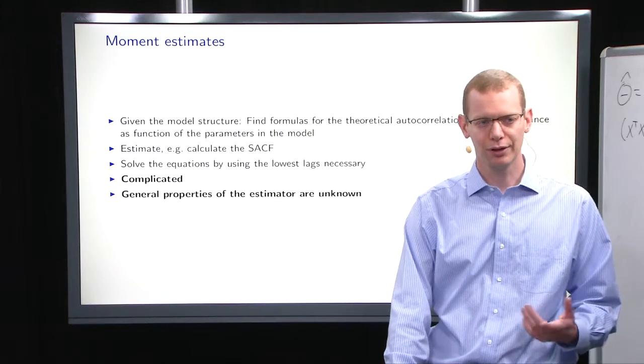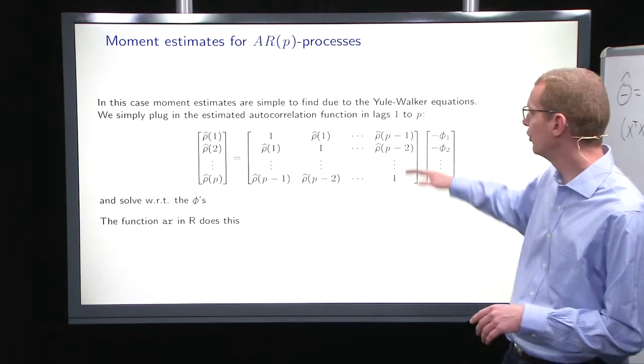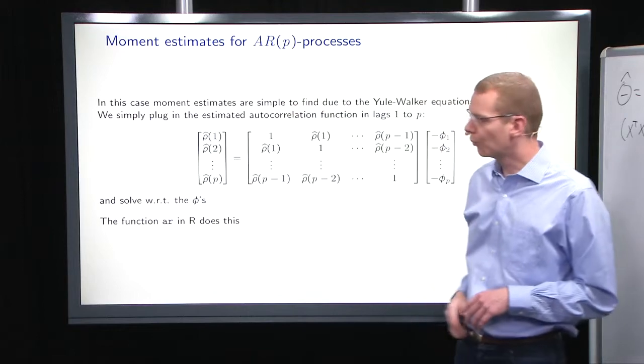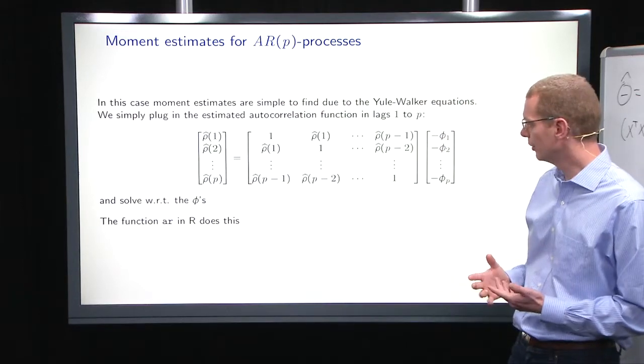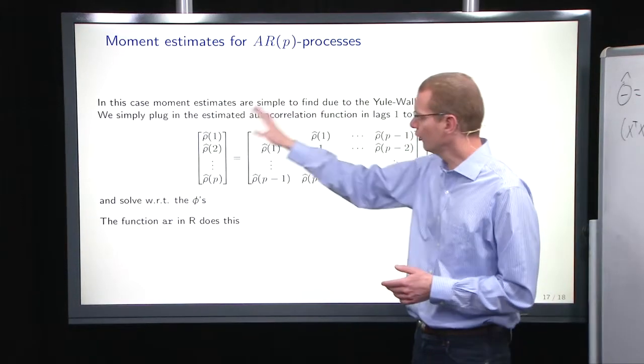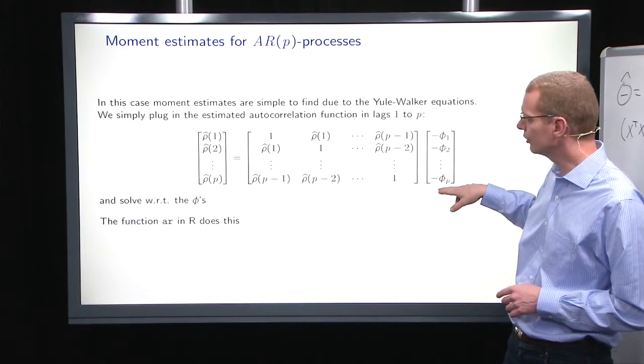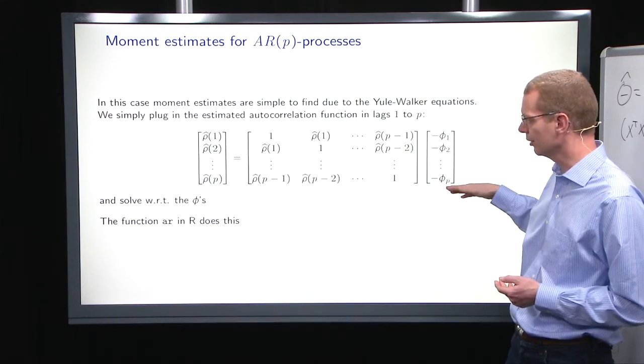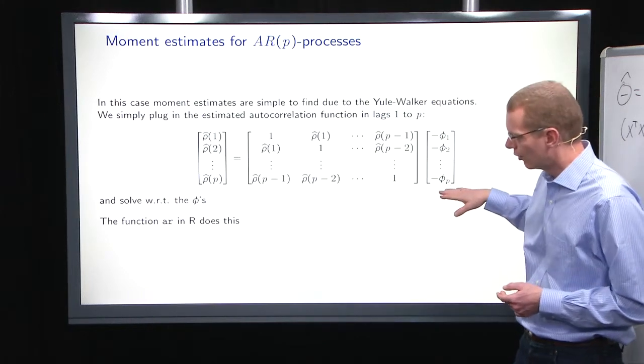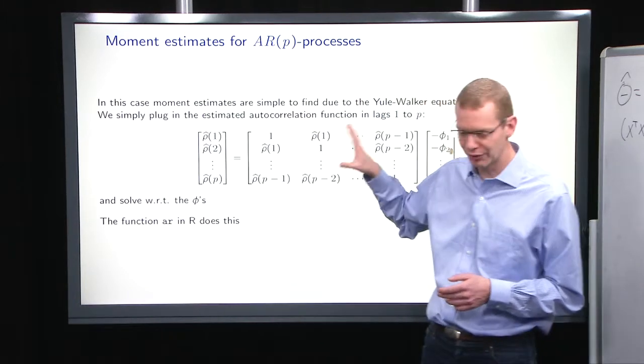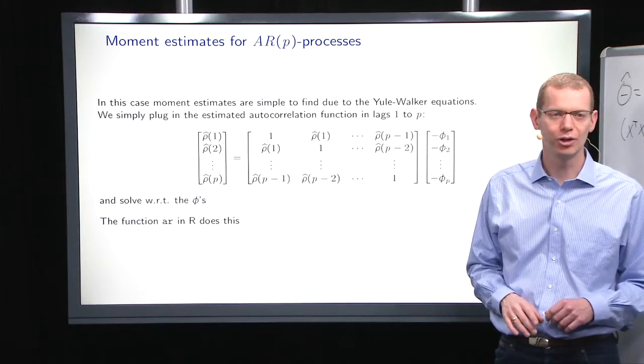There is, however, one exception, and that's for a pure autoregressive process where you can use the moment estimates. Given the autocorrelation structure of the data, you can estimate the parameters in a pure AR model by solving this set of equations named the Yule-Walker equations.